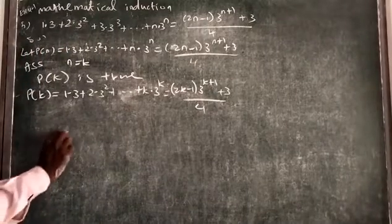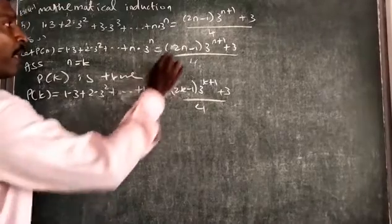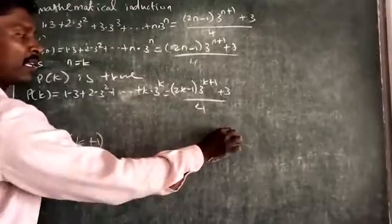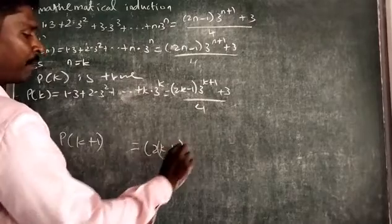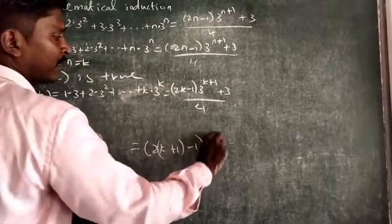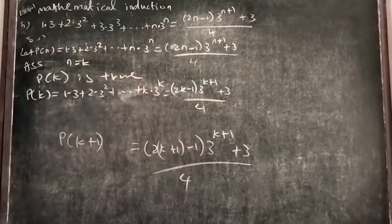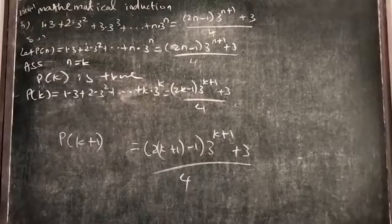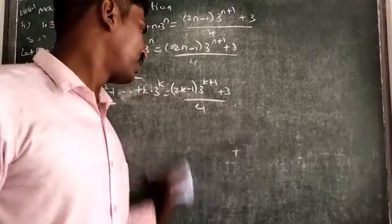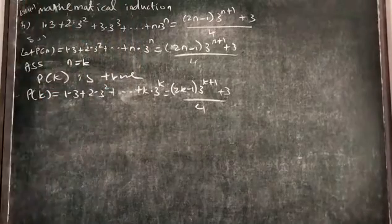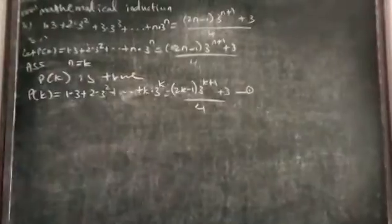Now we want to prove that P of k plus 1 is true. To verify P of k plus 1, we expand the terms up to k plus 1. If we expand the term in that pattern and bring the result into the same form, then we can confirm that P of k plus 1 is true. We take the k-term sum as equation 1.